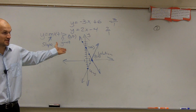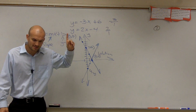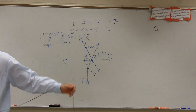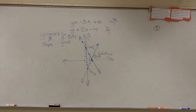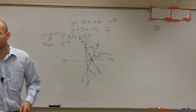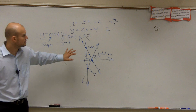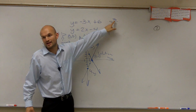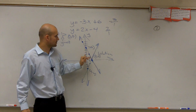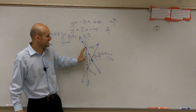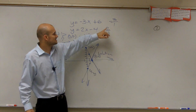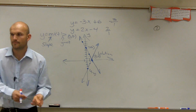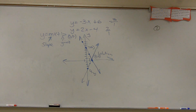So this system is consistent because there is a solution, and since there's only one solution, it's independent. A student asked about the negative 3 — we just write it as our slope, and it tells us the change between our points: either down 3 over 1 or up 3 to the left 1. Another student asks: what if y equals x?